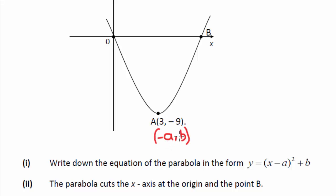So it's minus a and b, that's your x and y coordinates. So what we've got is a equals minus 3, b equals minus 9. So if I write this equation down the way they want it is x minus 3 squared minus 9. So that gets your mark.